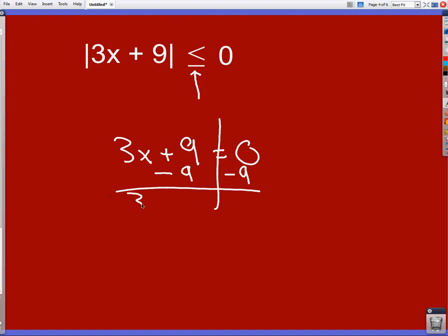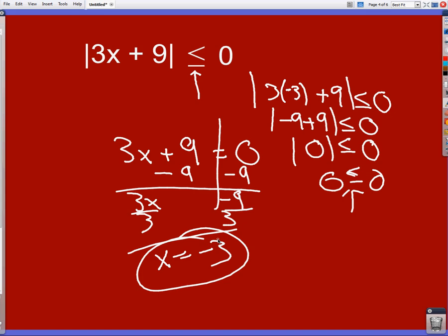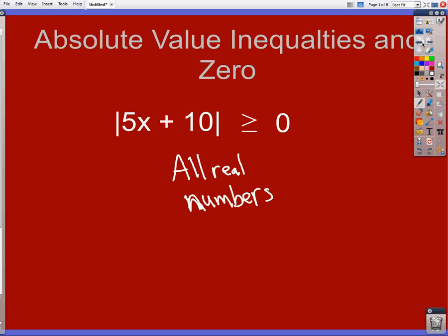So what we're going to do to find our one answer is set it equal to zero. So I'm going to subtract nine, three x minus nine, I'm going to divide by three. So the only possible time that it works is when x is equal to three. And you can plug that back in. Negative three times three is negative nine plus nine gives me an absolute value of zero, which is just a zero. Which does meet the criteria of being less than or equal to zero. So the only answer choice when you have an absolute value less than or equal to zero is when you have a number that you're going to plug in that gives you a zero to match it.